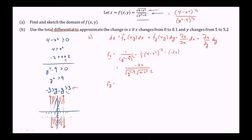For the partial derivative with respect to y, we treat y as the variable and x as a constant. So (4 minus x squared) to the one-half is treated as a constant, and we differentiate (y squared minus 9) to the negative one-half. That gives negative one-half times (y squared minus 9) to the negative three-halves, times the derivative of y squared minus 9, which is 2y. This simplifies to the square root of (4 minus x squared) times 2y, divided by negative 2 times (y squared minus 9) to the three-halves power.